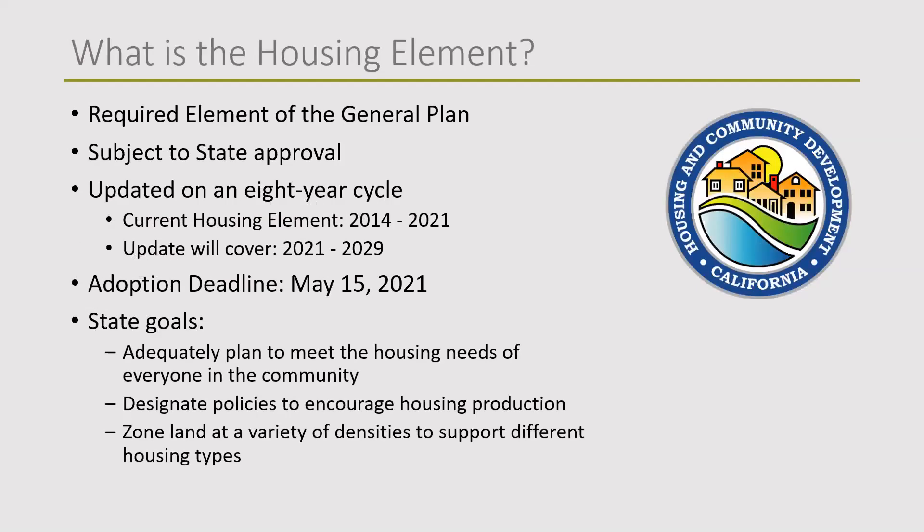The housing element is part of the city's General Plan, which is the fundamental planning document that directs future growth, development, and conservation policy in the city, reflecting the long-range vision of the community. It's made up of eight mandatory elements as well as various optional elements — one of which is housing. The housing element is the only one subject to state approval and certification on a set schedule, or what we refer to as cycles.